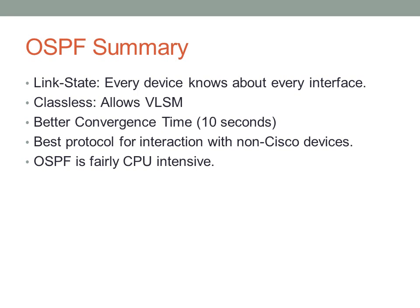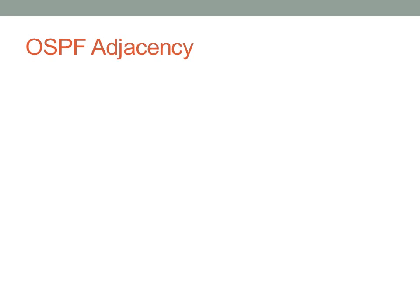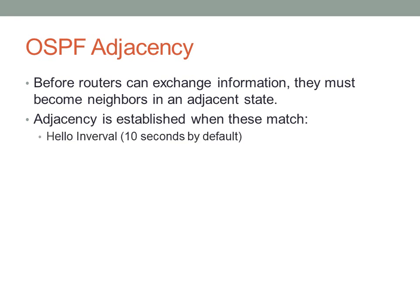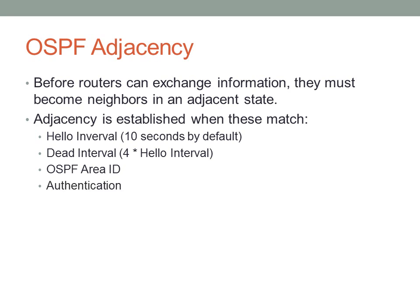OSPF is fairly CPU intensive, so it didn't really take hold until we started seeing beefier routers. The first thing to talk about with OSPF is adjacency. Before routers can exchange their link state information, they have to become neighbors in an adjacent state. Adjacency is established when the following criteria match — you should know these for the CCNA: the hello interval matches (10 seconds by default), the dead interval matches (typically four times the hello interval), the OSPF area ID matches, and the authentication credentials match. There are also some OSPF options that need to match.